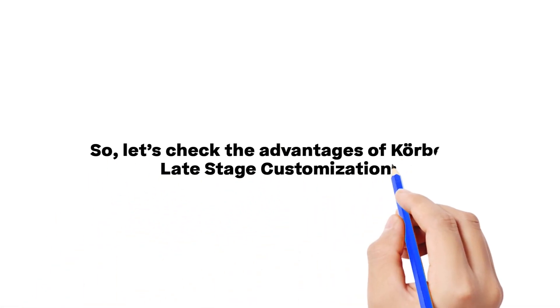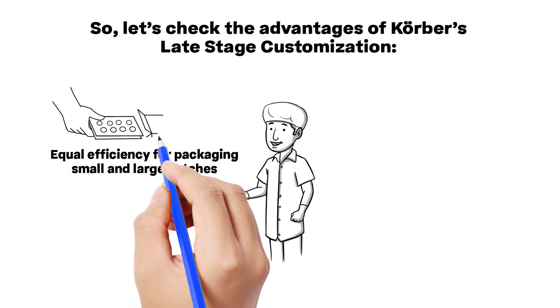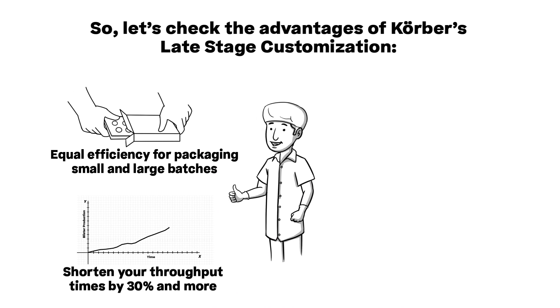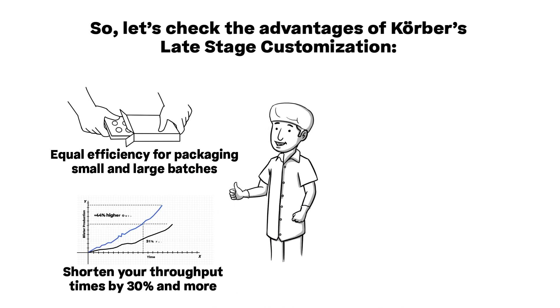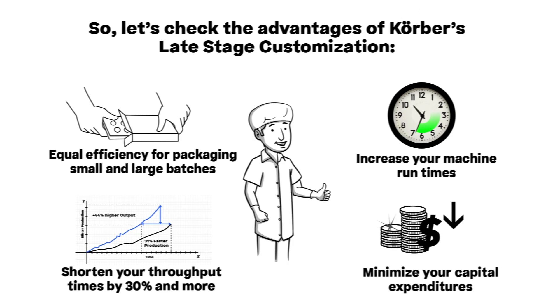So let's check the advantages of Korber's late-stage customization. Equal efficiency for packaging small and large batches. Shorten your throughput times by 30% and more. Increase your machine's run time and minimize your capital expenditures.